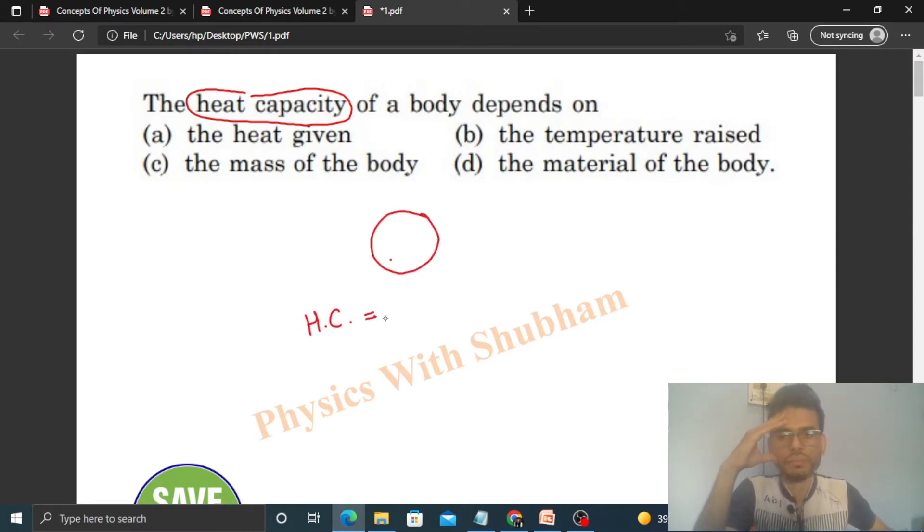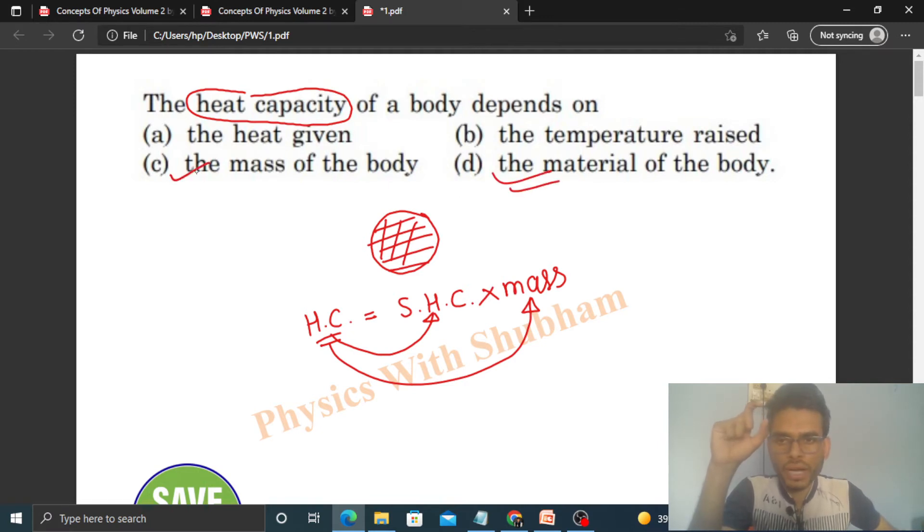Then iska heat capacity hoga - that will be the specific heat capacity of the material of this body, just material se ye body bana, into mass of the body. So aap dekho, jo heat capacity hai wo mass par depend karta hai and specific heat capacity par depend karta hai. Specific heat capacity us material ka jis material se aapka body bana, so kind of material par depend karta hai and mass par depend karta hai.